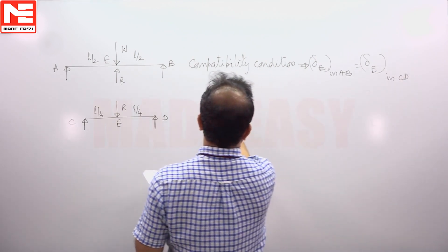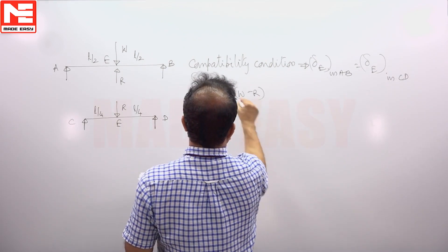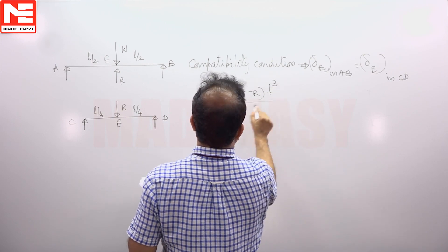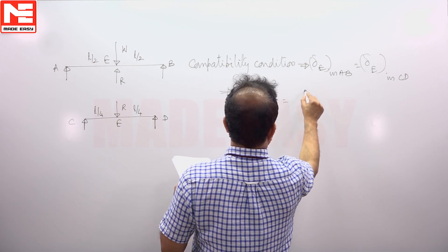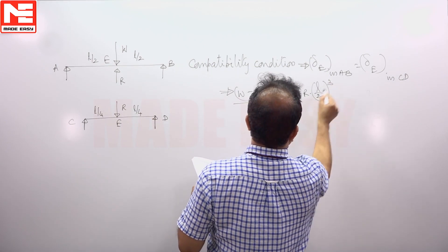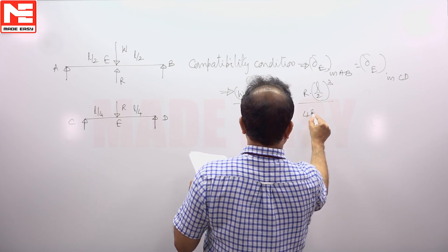So you will get W minus R L cube by 48 EI is equal to R into L cube. L means L by 2, L cube by 48 EI.